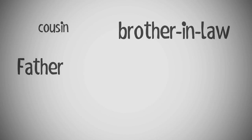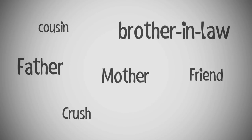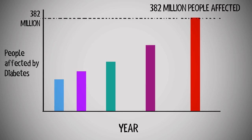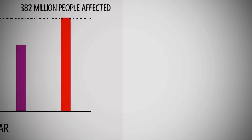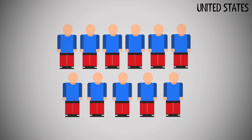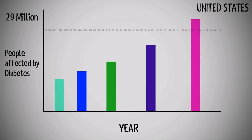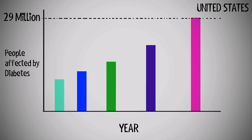You may know someone who has diabetes, or you may even have diabetes yourself. The rapid growth of diabetes has affected 382 million people worldwide. In the United States, one out of every 11 people have diabetes, meaning over 29 million people in the U.S. alone are living with diabetes.